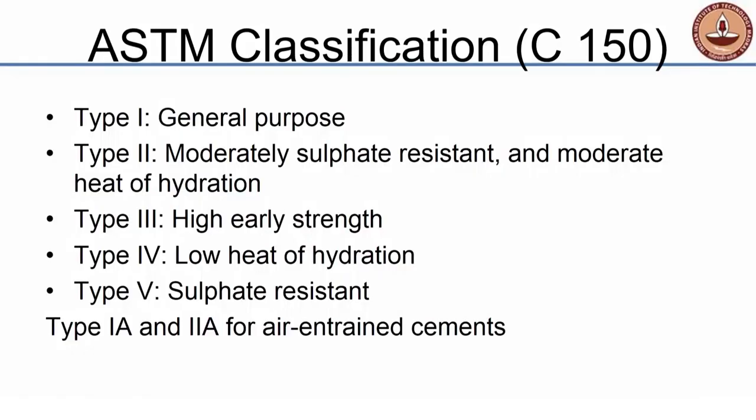ASTM standards classify cement into 5 different types: Type 1, 2, 3, 4, and 5. Type 1 is called general purpose cement — in India we simply call this OPC, Ordinary Portland Cement. The second type is moderately sulphate resistant and moderate heat of hydration, which we do not have in India. We do not have a cement like this which is neither OPC nor sulphate resistant nor low heat — it is somewhere in between.